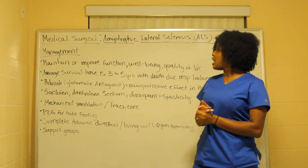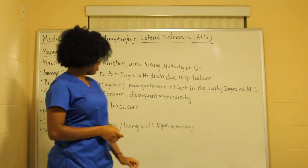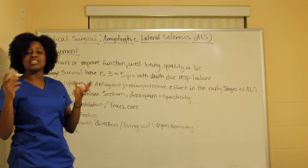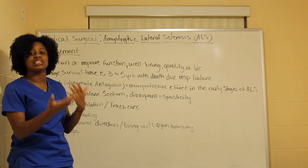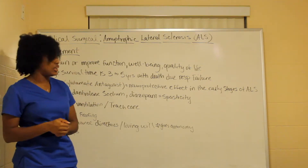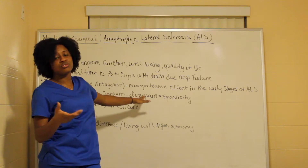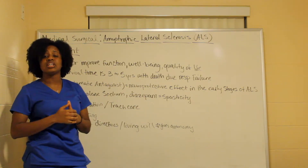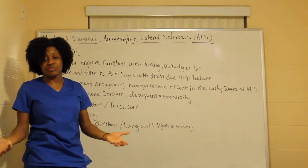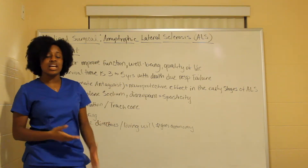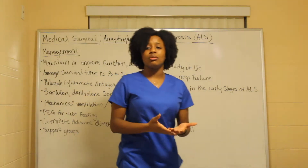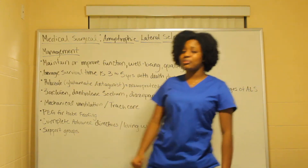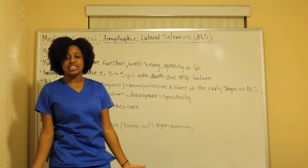Medications include Riluzole, a glutamate antagonist that blocks the overexcitation of glutamate that is causing motor neuron cells to die. It has a neuroprotective effect in the early stages of ALS — once cells have already died it is less effective. Baclofen, Dantrolene Sodium, and Diazepam are used to help treat the spasticity the patient will have.